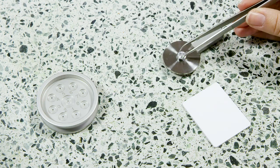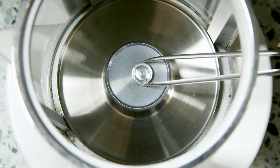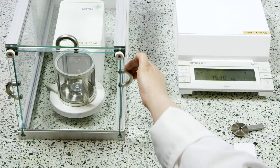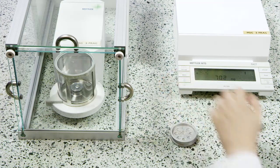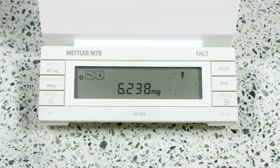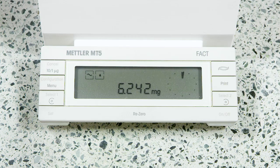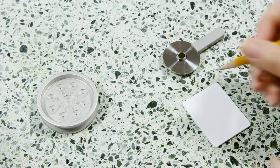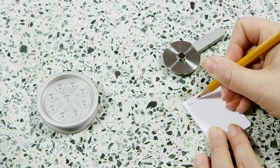Transfer the closed crucible back to the balance. Close the weighing compartment and let the balance stabilize. Read the weight displayed on the balance terminal and note it down on the whiteboard of the calibration box.